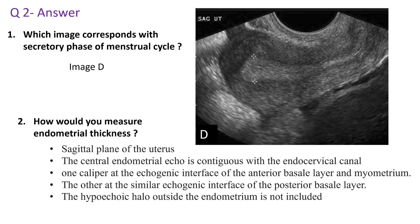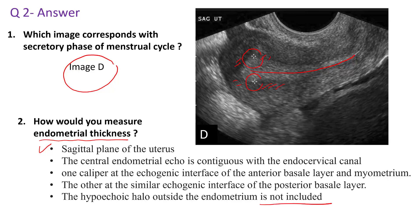The answer to the second question: image D corresponds to the secretory phase of the menstrual cycle. Regarding measurement of endometrial thickness, obtain a sagittal plane of the uterus. The central endometrial echo is continuous with the endocervical canal. Place one caliper at the echogenic interface of the anterior basal layer and myometrium, and the other caliper at the similar echogenic interface of the posterior basal layer. The hypoechoic halo surrounding the endometrium is not included in the measurement.